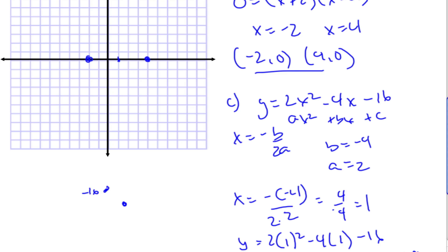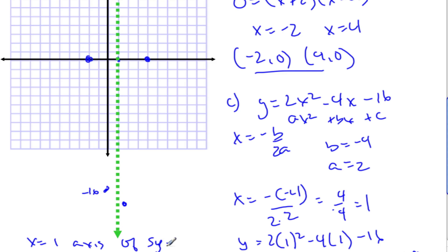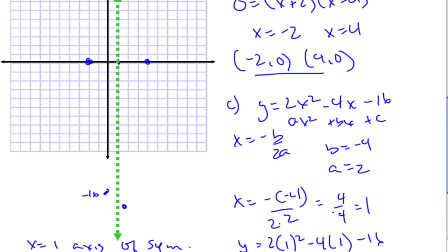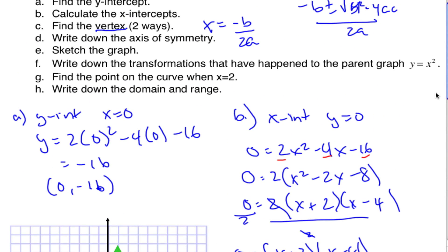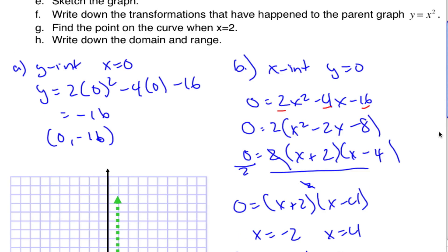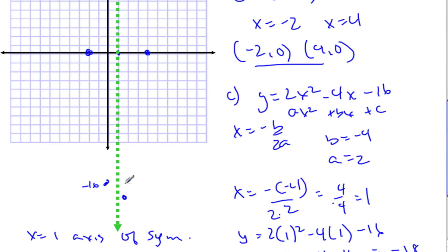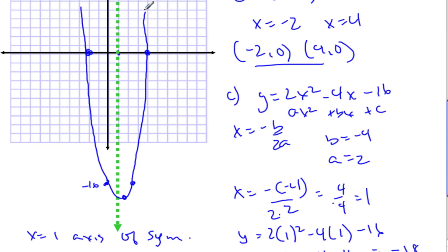The axis of symmetry is just the vertical line through the vertex, and we write it as an equation: x = 1. Now let's sketch the graph. Using symmetry, here's the y-intercept, and there's a corresponding point on the other side. Connecting those dots gives us the parabola opening upward.